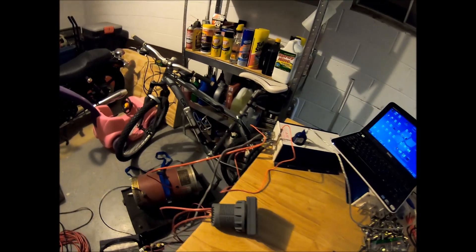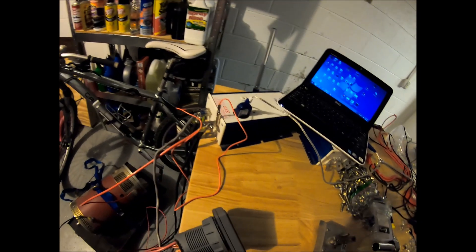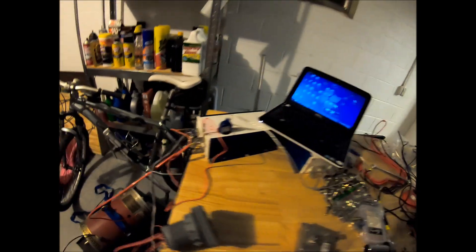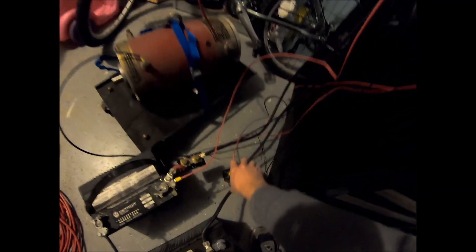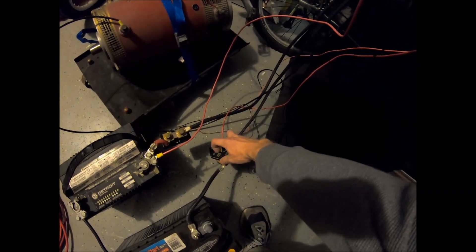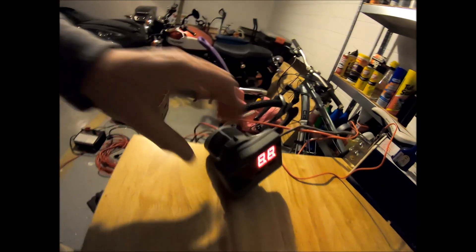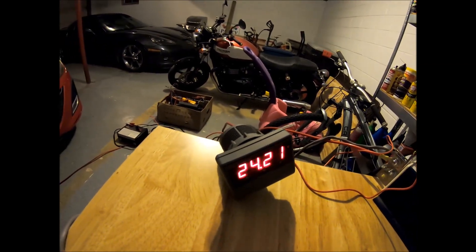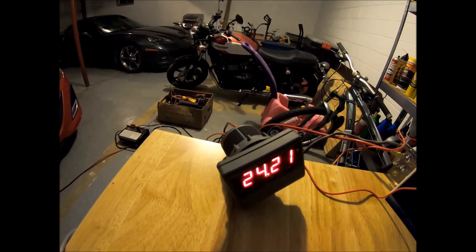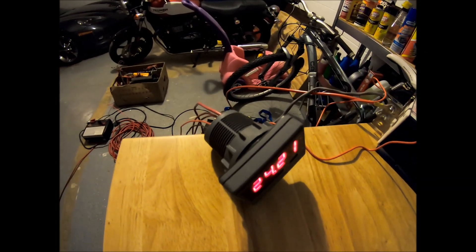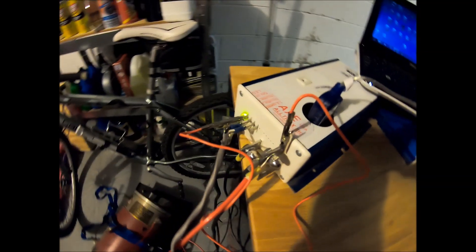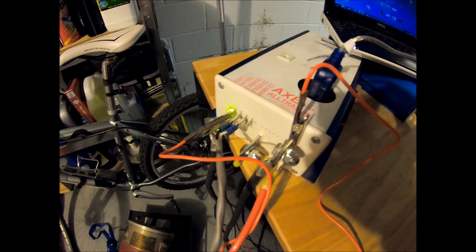I just want to do a functionality check, so we'll go ahead and power things up and see how everything works. Flip our breaker on. So we got voltage on our meter there, and our status light comes on green on the controller.